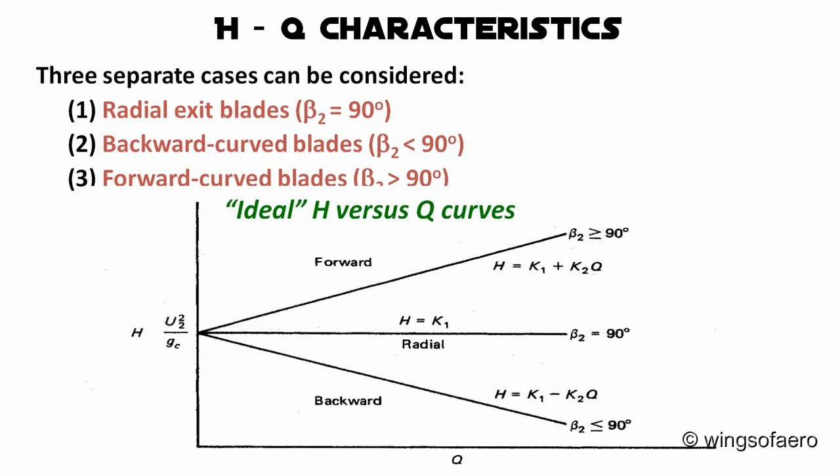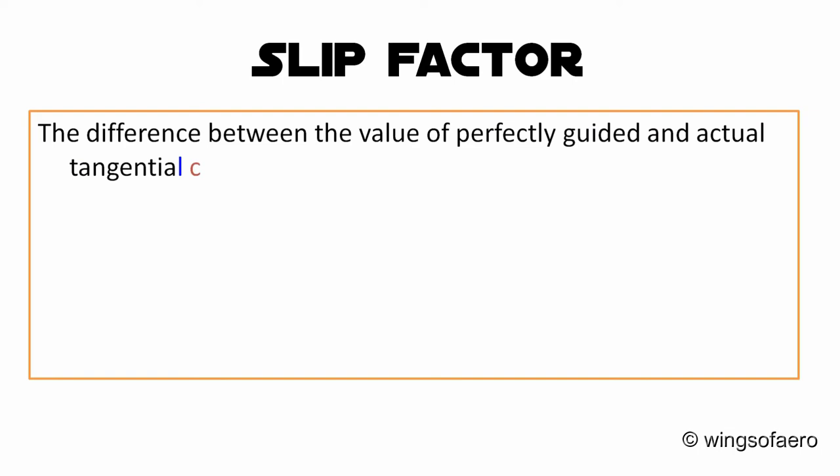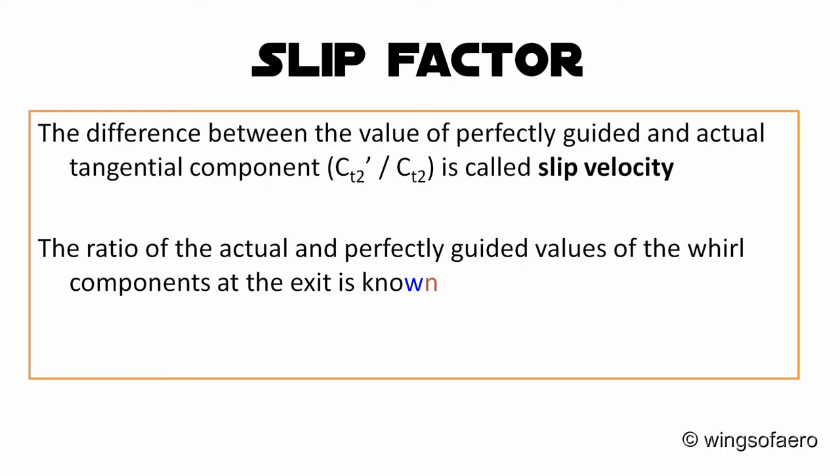Slip factor: The ratio of the actual to the perfectly guided values of the whirl component at the exit is known as the slip factor μ. μ = Ct2 / Ct2′, where Ct2 is the actual whirl velocity and Ct2′ is the perfectly guided whirl velocity.